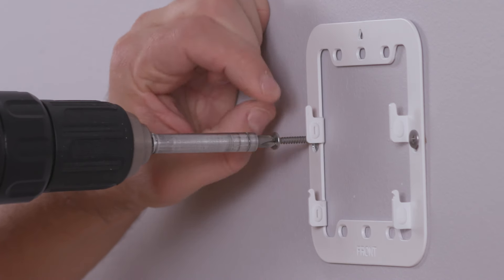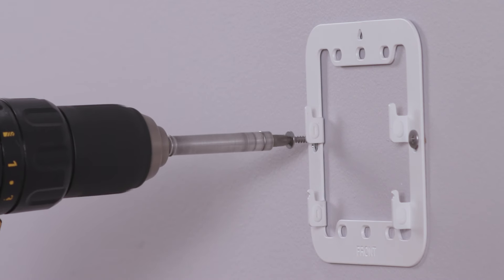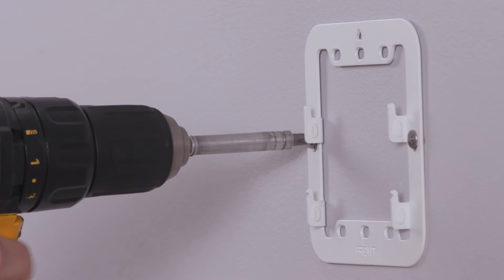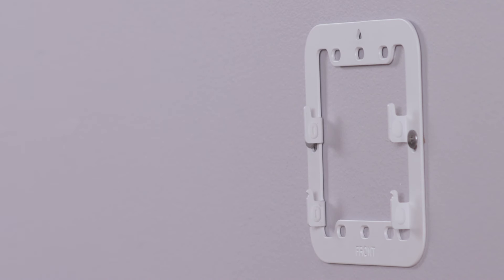With the Phillips driver bit, drive the screws through the wall mount holes and into the installed anchors until the screws are flat against the wall mount.